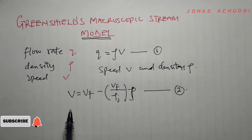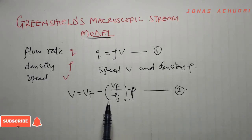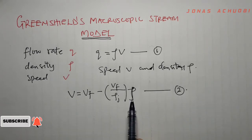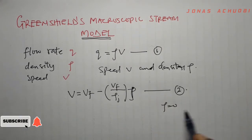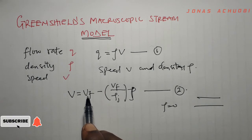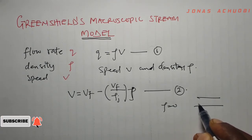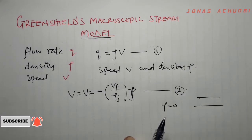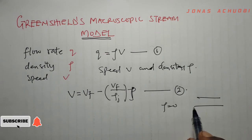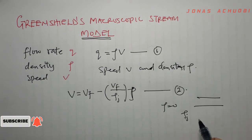Here V is the mean speed at density ρ. VF is the free flow speed, attained when density ρ is zero — meaning there are no vehicles on the road, so any vehicle present can travel at its maximum speed VF. ρJ is the jam density, at which the mean speed is zero. At jam density, the road is so occupied that no vehicles are moving, so speed equals zero.